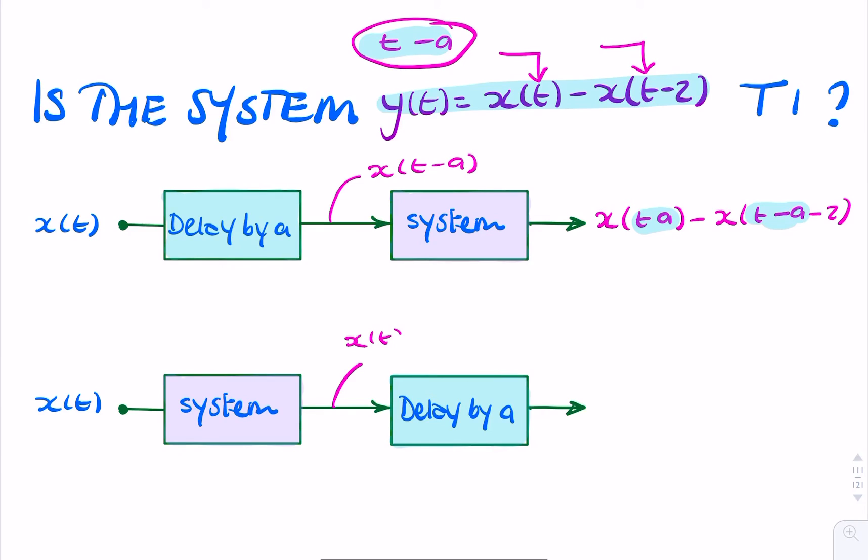It's simply x of t minus x of t minus 2. And if that's then delayed by a, then each of these will have an a subtracted from it. So I'll have x of t minus a minus x of t minus 2 minus a.